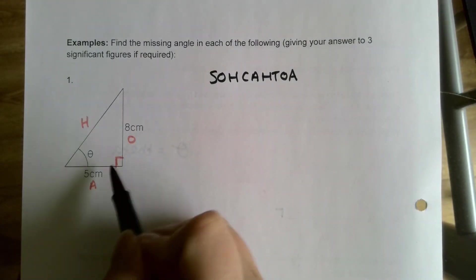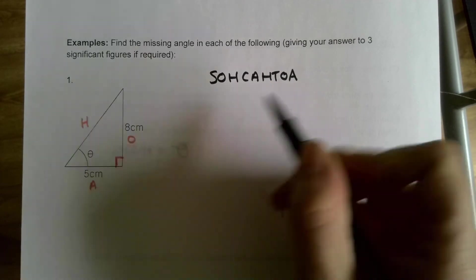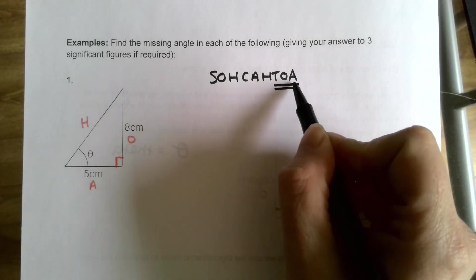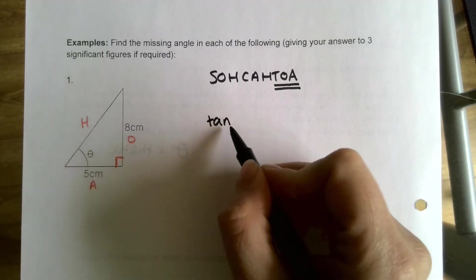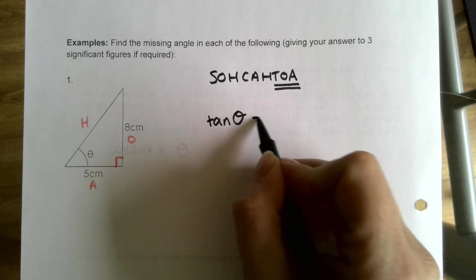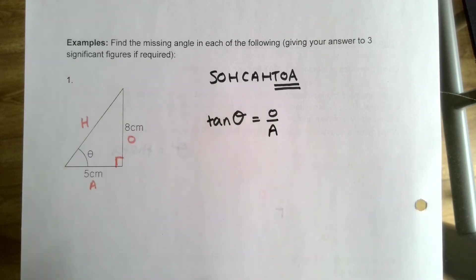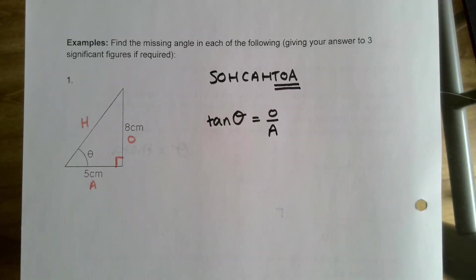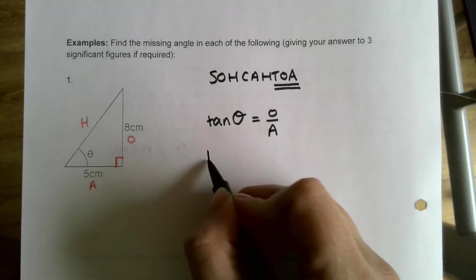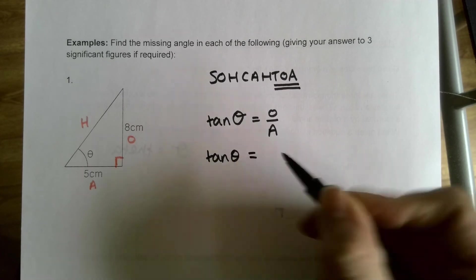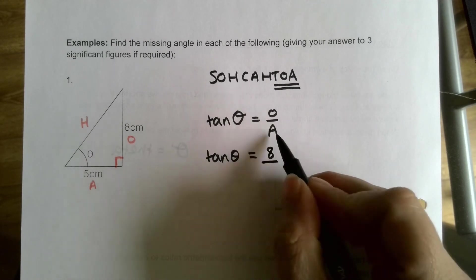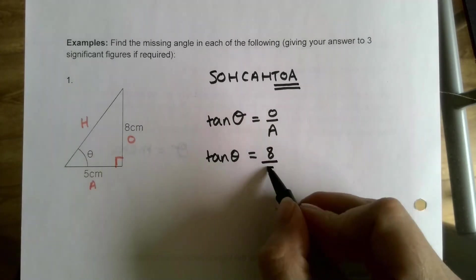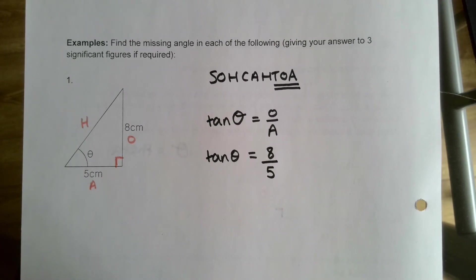We're using O and A, so the thing that links O and A is tan. So my first line of working is: tan θ = O/A. That's one of the rules from the page. Tan theta equals opposite divided by adjacent. My next line is: tan θ = 8/5.